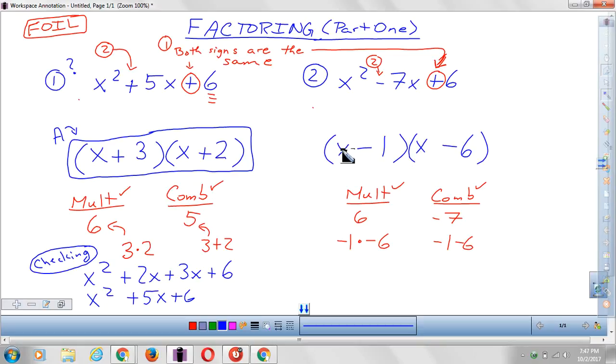And if I want to check my answer, I can do x times x makes x squared. Negative 6x is my outer. My inner is negative x. And my last is positive 6. And that's going to make me x squared minus 7x plus 6. Which means that I had the correct answer.